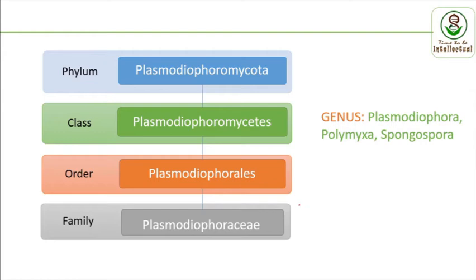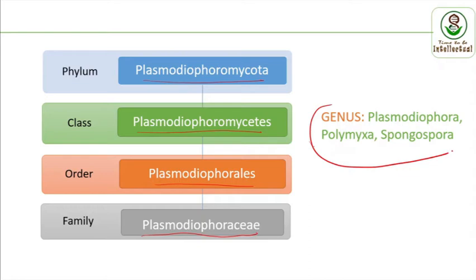Under Protozoa, the very important phylum for agriculture and plant pathology students is Plasmodiophyromycota. Under this phylum: class Plasmodiophoromycetes, order Plasmodiophorales, and family Plasmodiophoraceae. The three important genera we come across are Plasmodiophora, Polymyxa, and Spongospora.